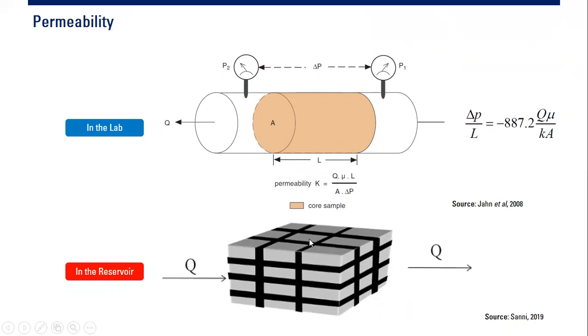But the definition is still the same. Permeability of a rock or permeability of the whole reservoir is the ability of the rock or the reservoir to enable fluid to flow through it, to flow through the rock, to flow through the reservoir. If you have high permeability you can get high flow rate. If you have low permeability you will have low flow rate.